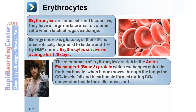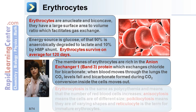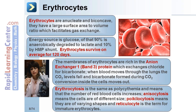which exchanges chloride for bicarbonate. When blood moves through the lungs, the CO2 levels fall, and bicarbonate is formed during CO2 conversion inside the cells, and then it moves out. A few terms to remember: erythrocytosis is the same as polycythemia and means the number of red blood cells increases. Anisocytosis means the cells are of different size. Poikilocytosis means they are of varying shapes. And reticulocyte is the term for immature erythrocytes.